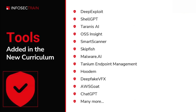Regarding tools, these have also been added to the new curriculum: Deep Exploit, Shell GPT, Terenix AI, OSS Insight, Smart Scanner, Skipfish, Malware.ai, Tanium Endpoint Management, QDEM, DeepFake VFX, AWS Goat, ChatGPT, and many more. Previous practicals will also be there — it's just that how we use them with AI and how AI can be integrated has been further introduced in CEH version 13.